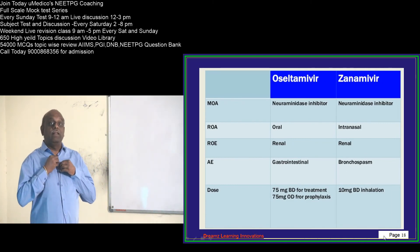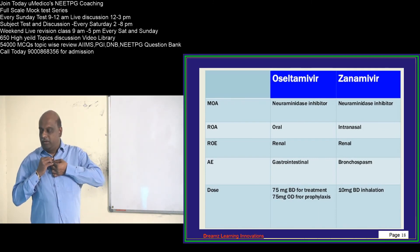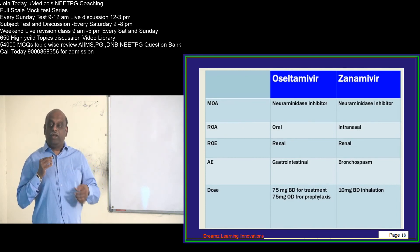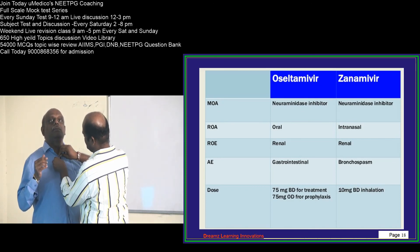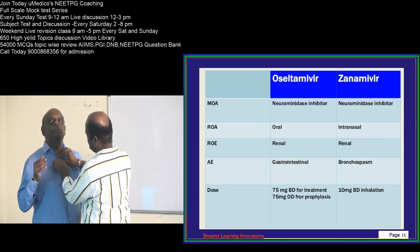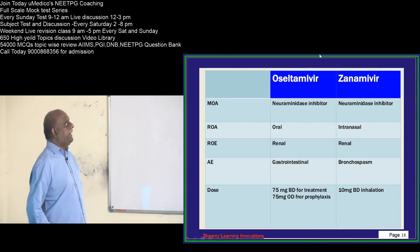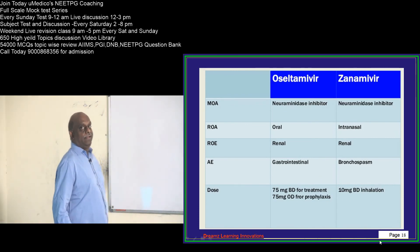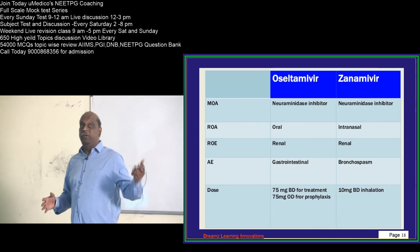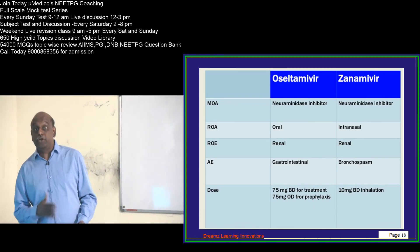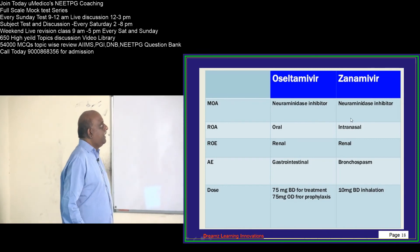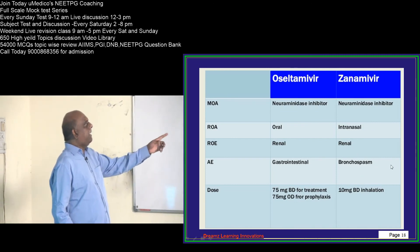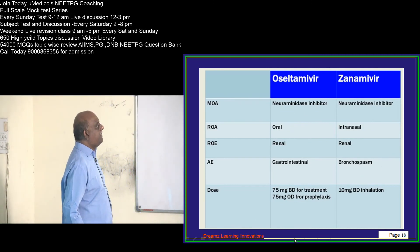Zanamivir is taken intranasally, whereas oseltamivir is taken orally. Both are neuraminidase inhibitors and both require intact renal function for elimination. Acyclovir also requires renal elimination and can cause tubular damage. Zanamivir can cause bronchospasm as an adverse effect.